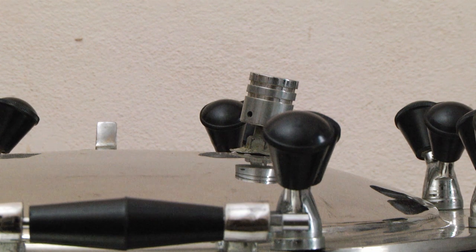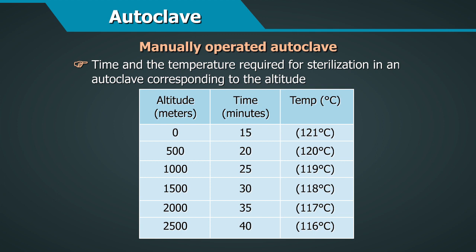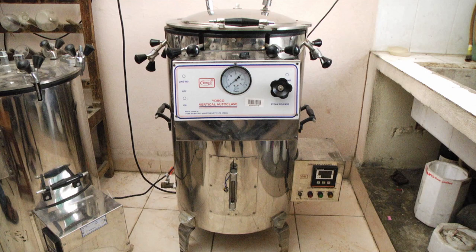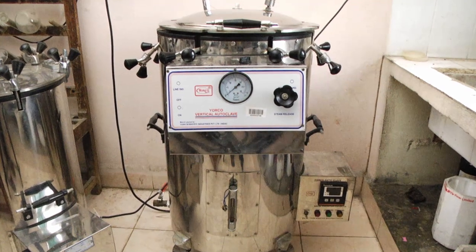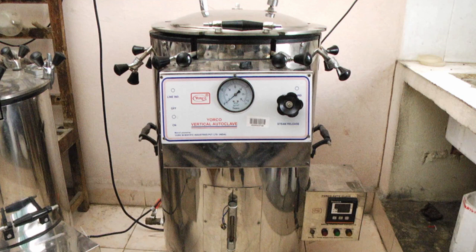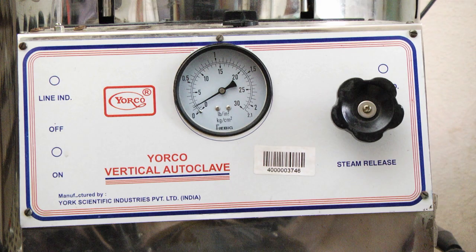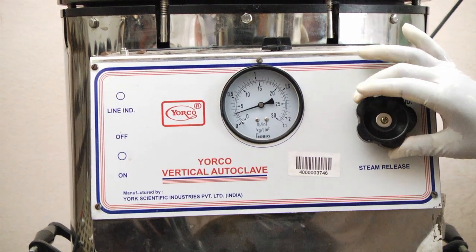The heat should be sufficient to maintain the required pressure for the duration of the sterilizing time. Depending on altitude, set the timer accordingly — a chart gives the time and temperature required for sterilization corresponding to altitude. At the end of the sterilizing time, turn off the heat and allow the autoclave to cool naturally, which may take several hours, particularly for culture media. When the thermometer reads below 80 degrees centigrade and the pressure gauge registers zero, slowly open the draw-off cock to vent the autoclave.